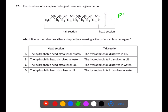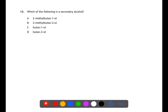Question twelve is looking at detergents. Detergents have a similar but slightly different structure to soaps; however their mode of action is the same. The head section of a detergent is polar and therefore hydrophilic, so it will dissolve in water. The tail section is non-polar and hydrophobic and will dissolve in oil. Therefore B will be the answer.